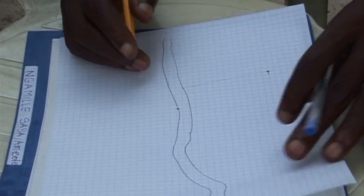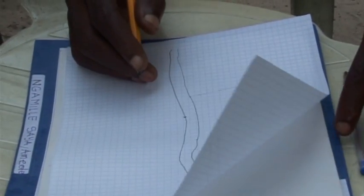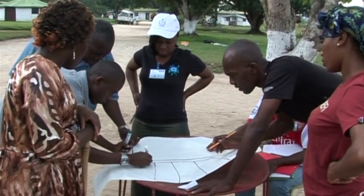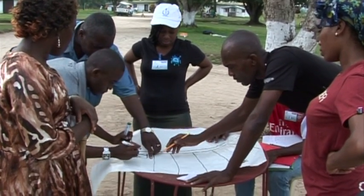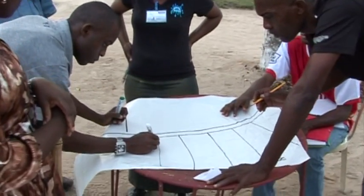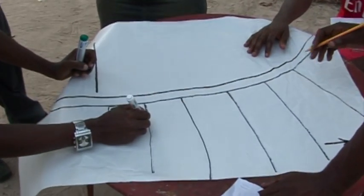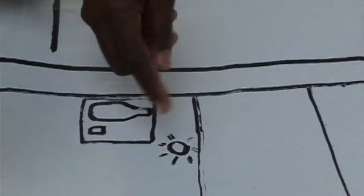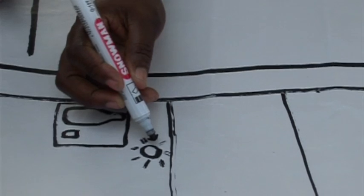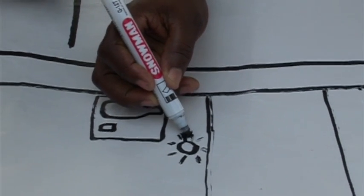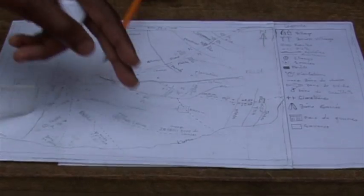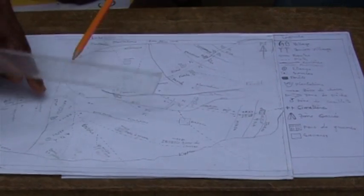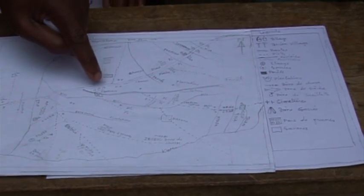Once the ground map has been completed, it can be transferred onto a sketch map for permanent record. It is usually best to use a large size so that sufficient detail can be added. Draw in pencil first so that any mistakes can be corrected or additions made. During this phase, the community will need to decide on a legend for the different symbols and colours to include on their map.